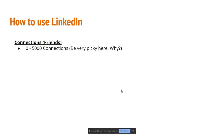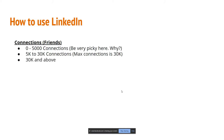There are three milestones for the number of connections. The first milestone is 5,000 connections — you start with zero and gradually add more to reach 5K. The next milestone is 30K connections, because the maximum number LinkedIn allows is 30K. And the third is 30K and above.